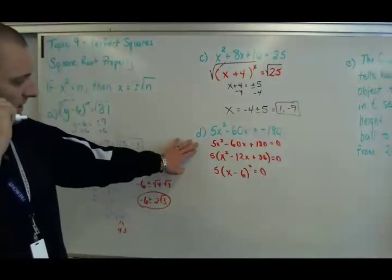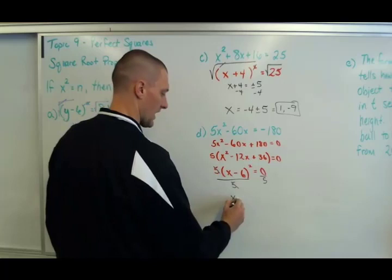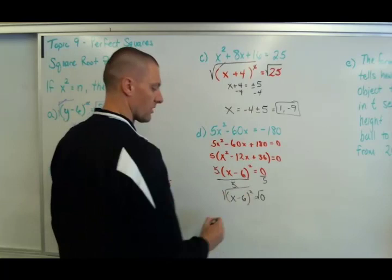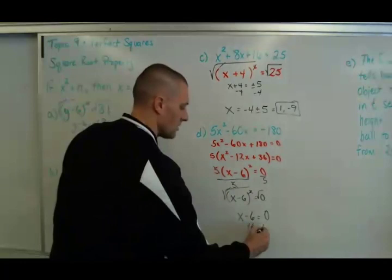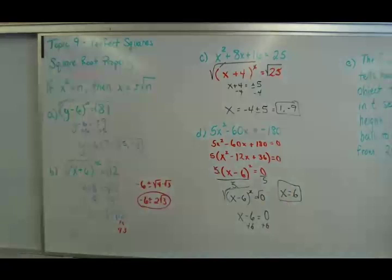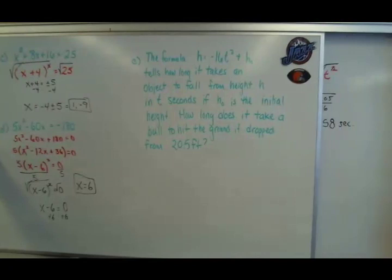For d, we solve it much the same way. Now we can't take this square root just yet because we got this 5 here. So just like a normal problem, if that was just x, you would divide by 5, so those cancel out. So you got (x - 6)² = 0. From here we take our square roots, so the square and square root cancel. That leaves me with x - 6 equals the square root of 0, which is just 0. Then add 6 to both sides and you end up with x = 6. And there's your final solution.